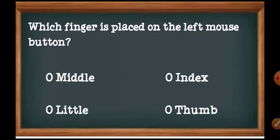Question number 7: Which finger is placed on the left mouse button? Options are: A) Middle, B) Index, C) Little, D) Thumb.